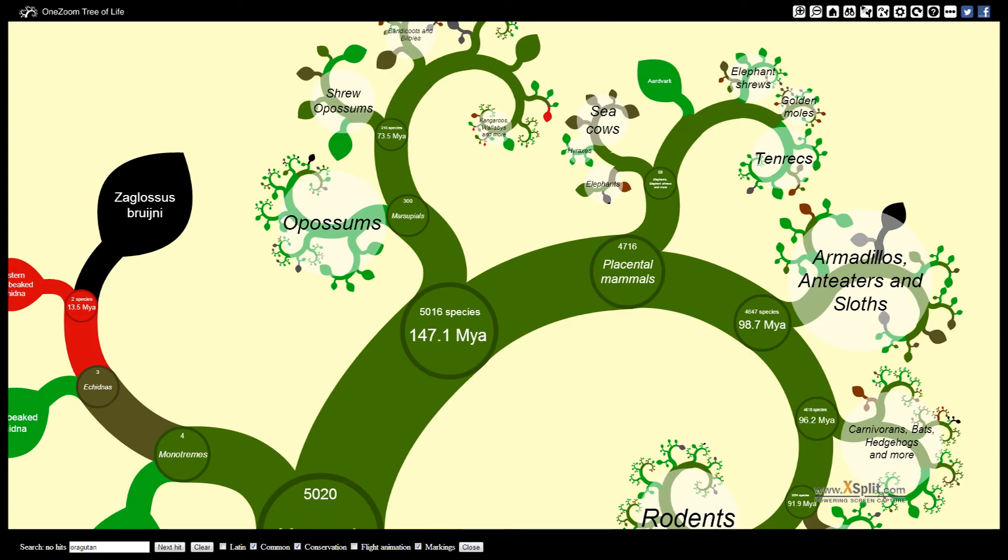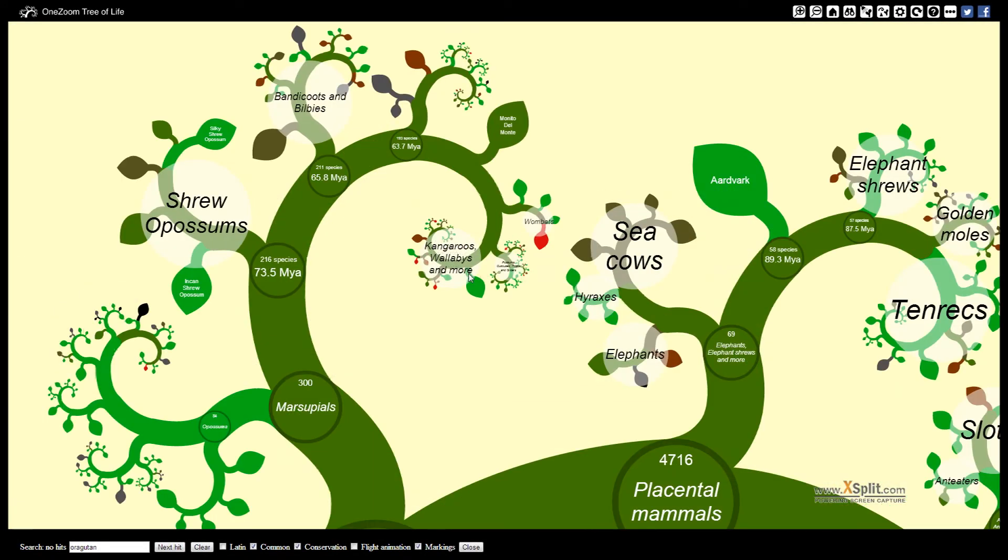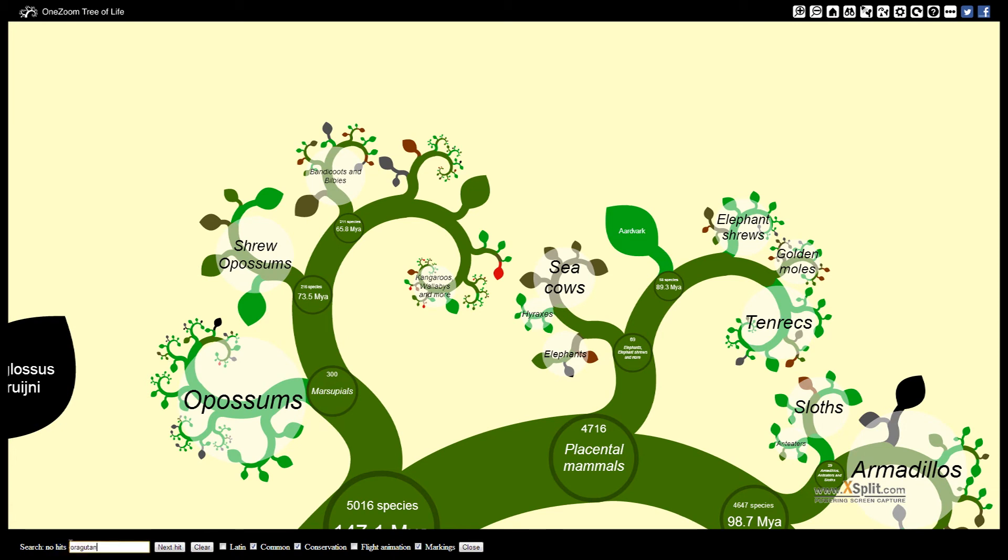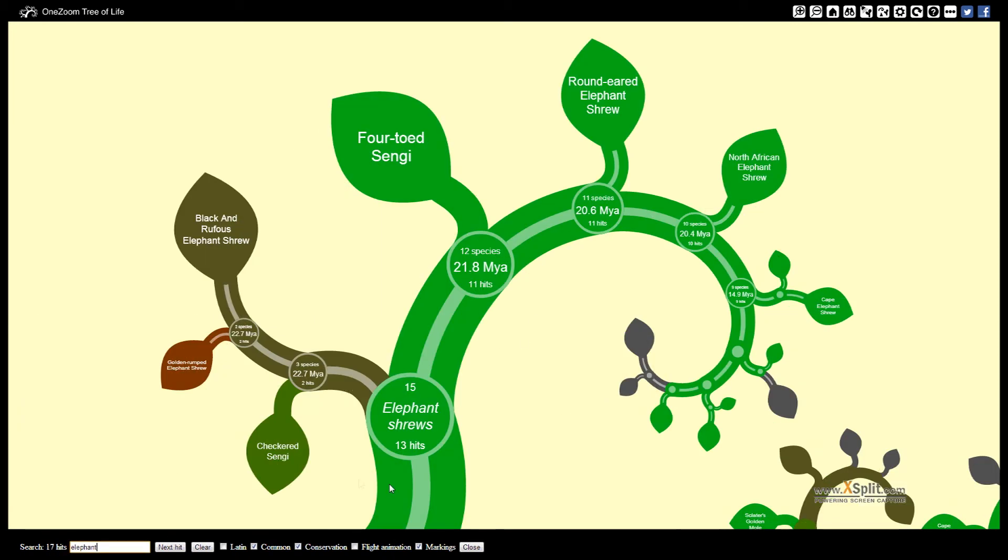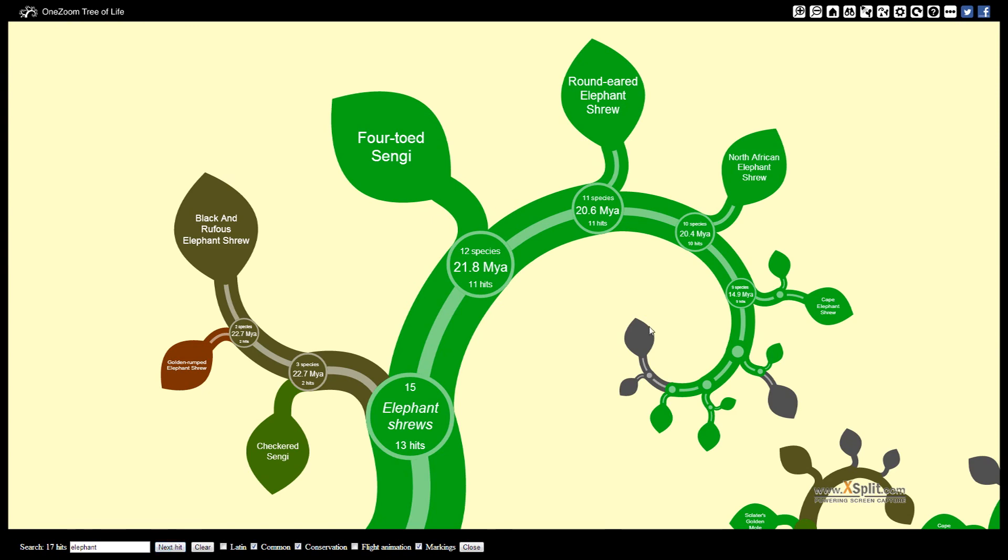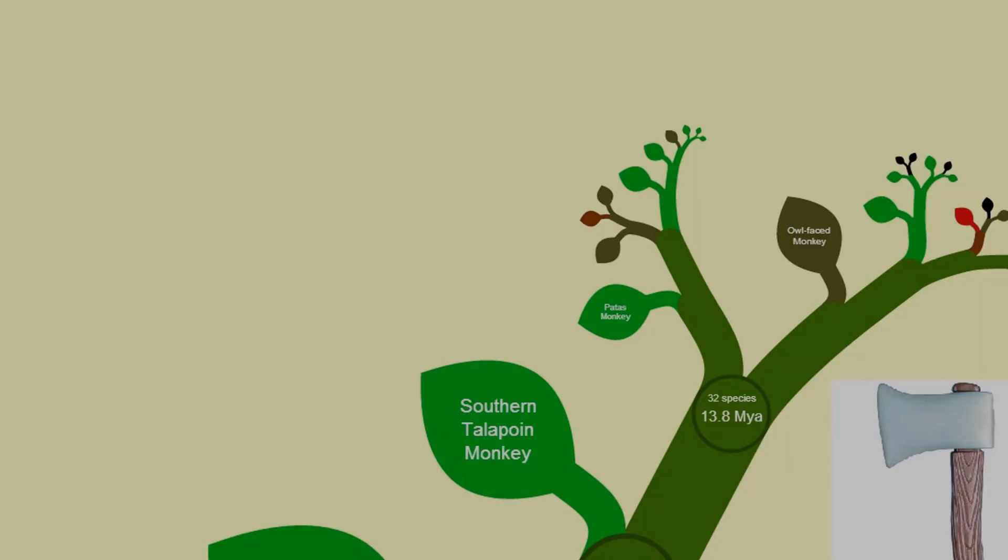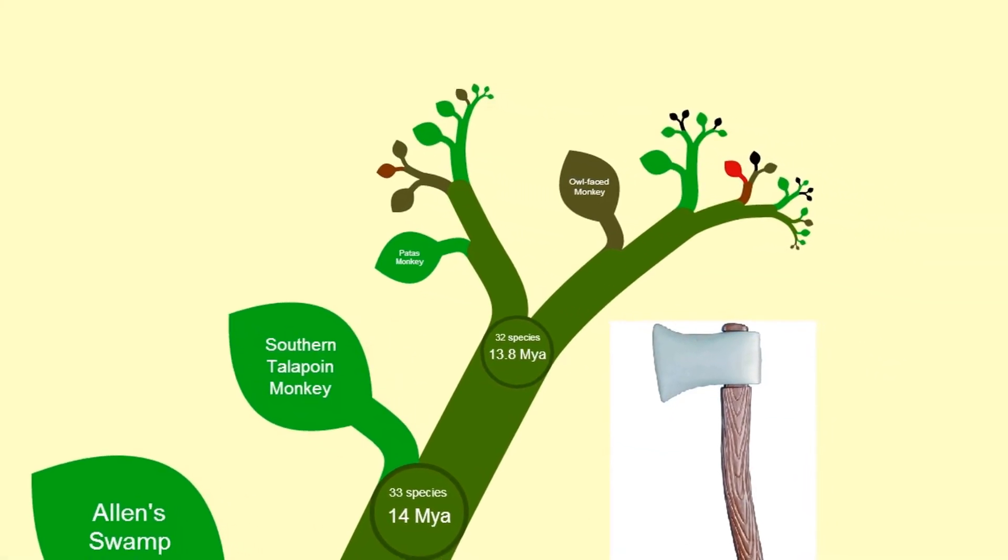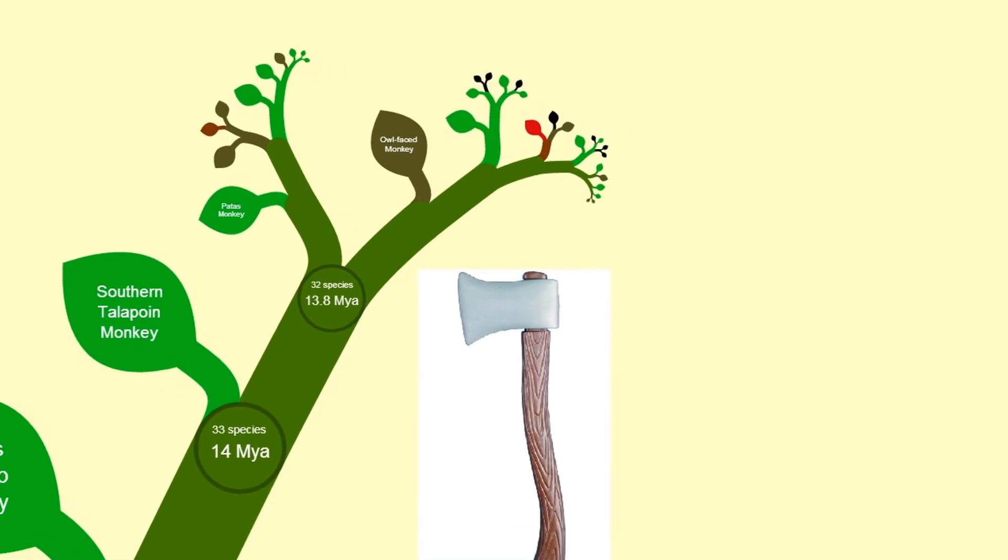Although the data visualization offered by OneZoom is quite interesting, it does not paint the entire picture. One of the primary goals of the endeavor is to heighten awareness about the threat of extinction of various organisms, but no suggestions are offered by the mapping tool. Perhaps inputting data about the effects of human actions on this tree of life may elucidate root causes of endangerment.